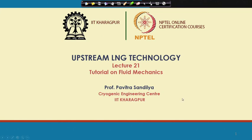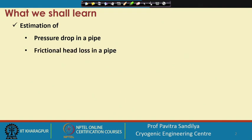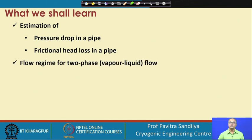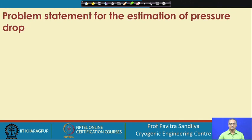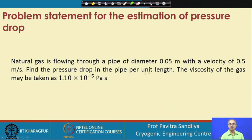In this tutorial, we shall learn how to estimate the pressure drop in a pipeline, the frictional head loss in a pipeline, and then we shall go to the two phase vapor-liquid flow in a natural gas pipeline. First, let us look into the estimation of pressure drop in a pipeline. The problem statement is: natural gas is flowing through a pipe of diameter 0.05 meter — that is 5 centimeters, approximately 2 inches — with a velocity of 0.5 meter per second. We have been asked to find out the pressure drop per unit length of the pipeline.